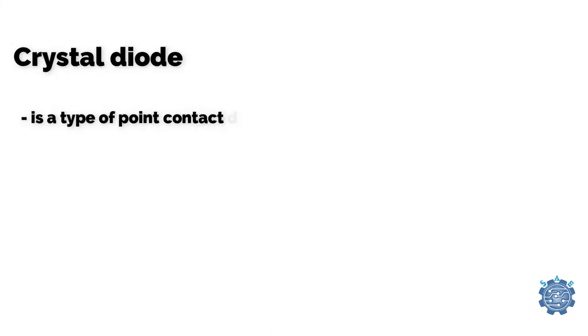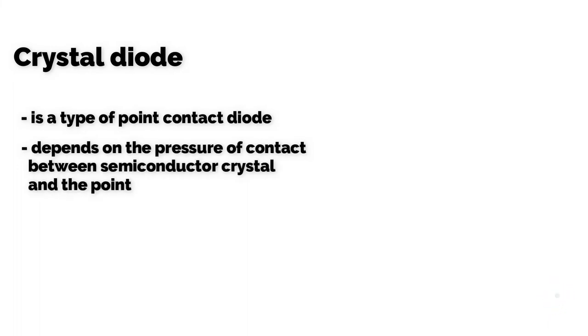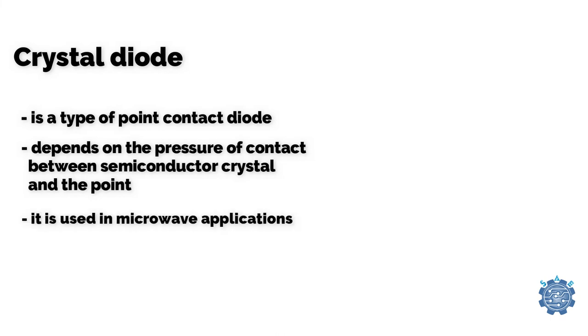Crystal diode is a type of point contact diode. It depends on the pressure of contact between a semiconductor crystal and the point. Mainly it is used in microwave applications.